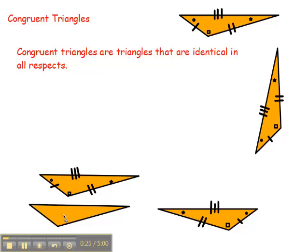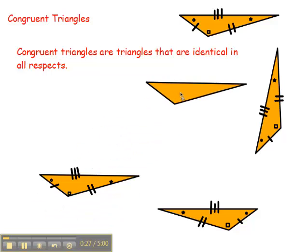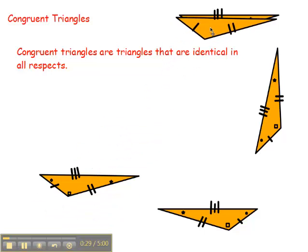This is a tracing of this one. If we translate this one up to the top one, with a little bit of margin for error you can see that those triangles are pretty much identical. In other words, they are congruent.